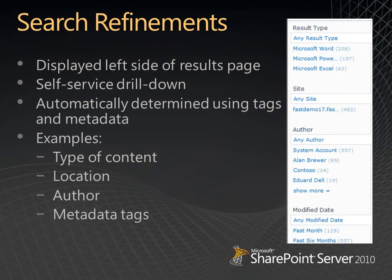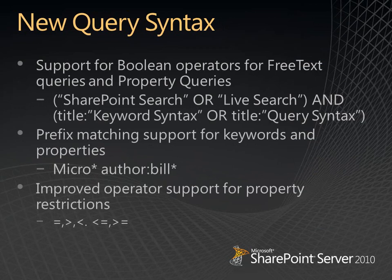The refinement panel is on the left-hand side of the page and is essentially a self-service drill-down. For example, if a user searched for 'dog' but was looking for 'German Shepherd,' they could start broad, then use a metadata tag on the left to filter down to German Shepherds, and drill down further until they arrive at the content they're looking for — even if they didn't know exactly what they were looking for to start.